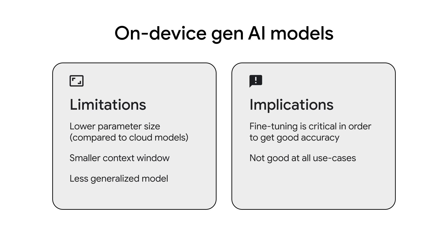So what are some implications for this? Fine-tuning is critical in order to get production quality. Zero-shot performance of the model has lower accuracy compared to what we're used to with larger models. Also, the model is not going to excel at all use cases — for example, it's not as performant for open-ended conversations like chatbot or code generation.